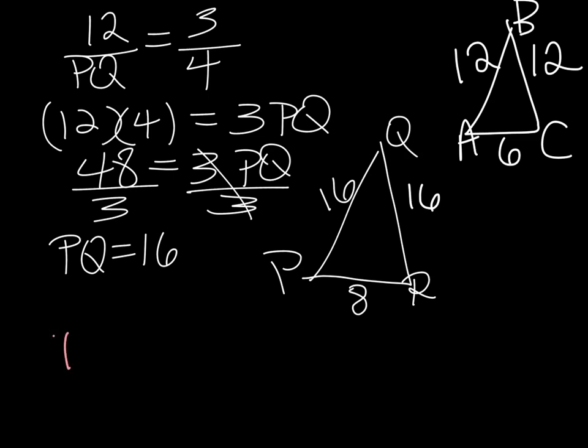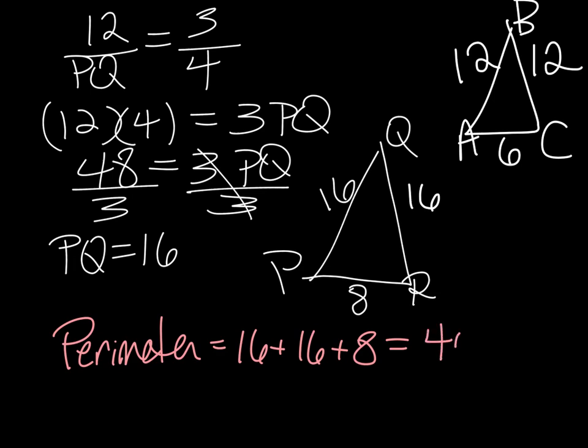And so the perimeter is equal to 16 plus 16 plus 8, which is equal to 32 plus 8, which is equal to 40. And that's the answer.